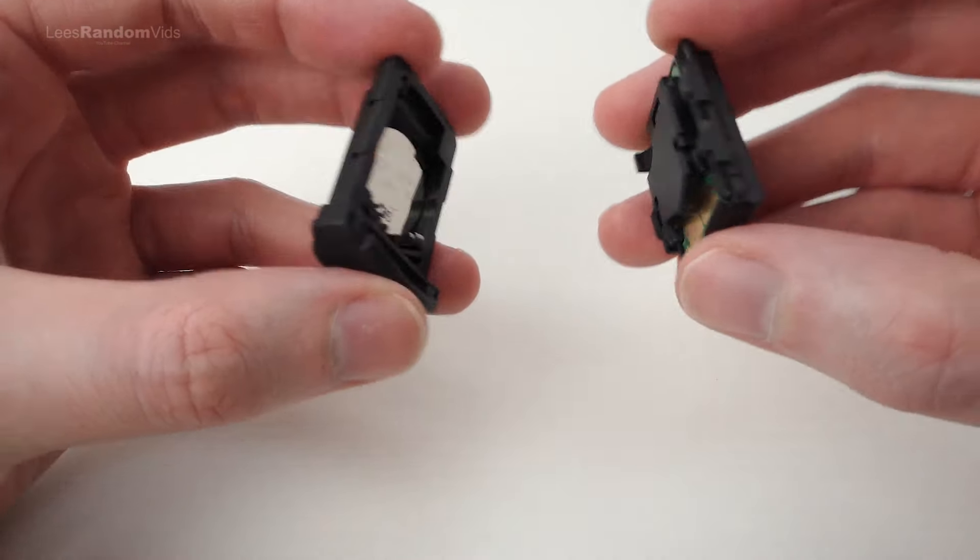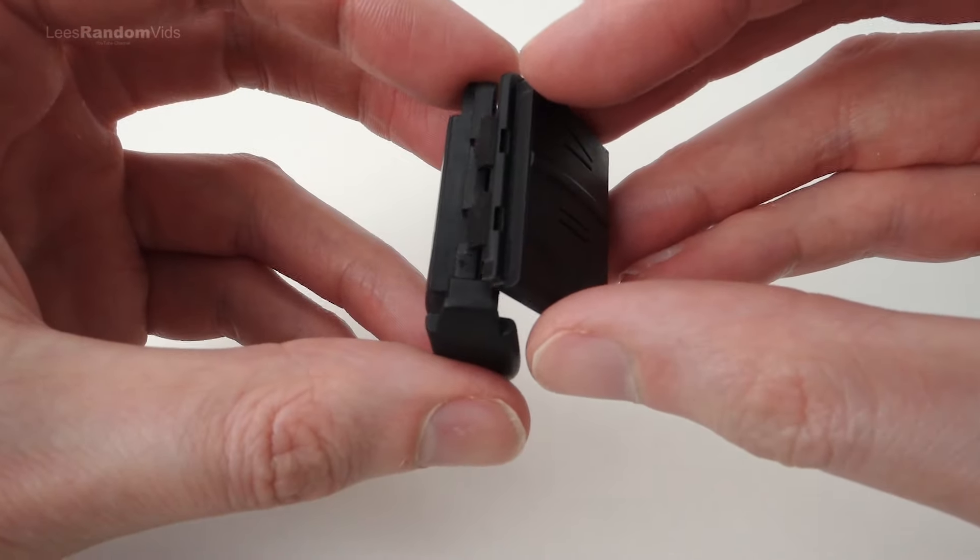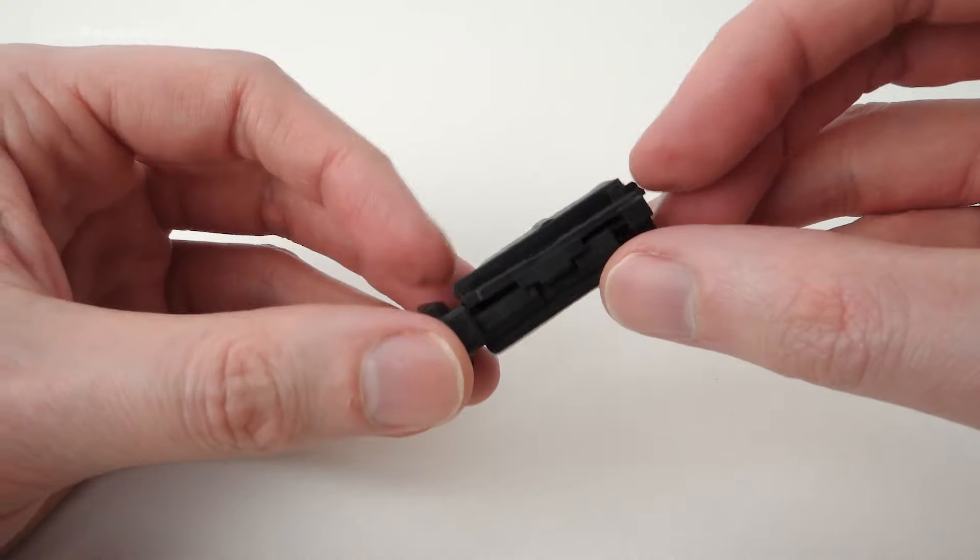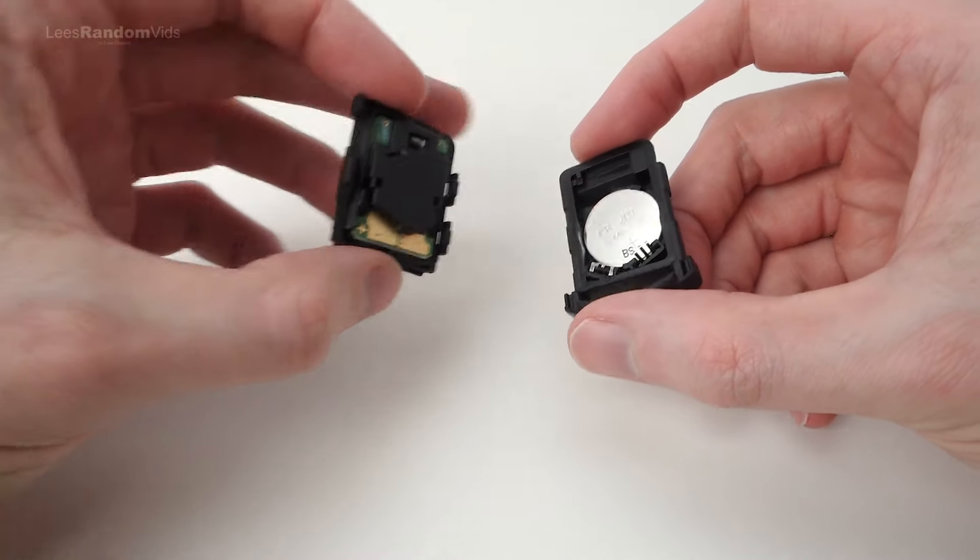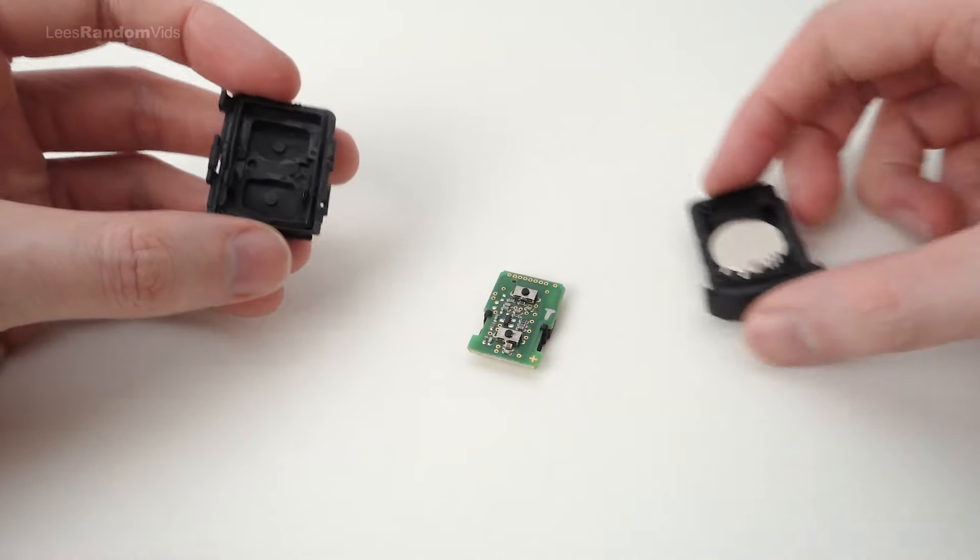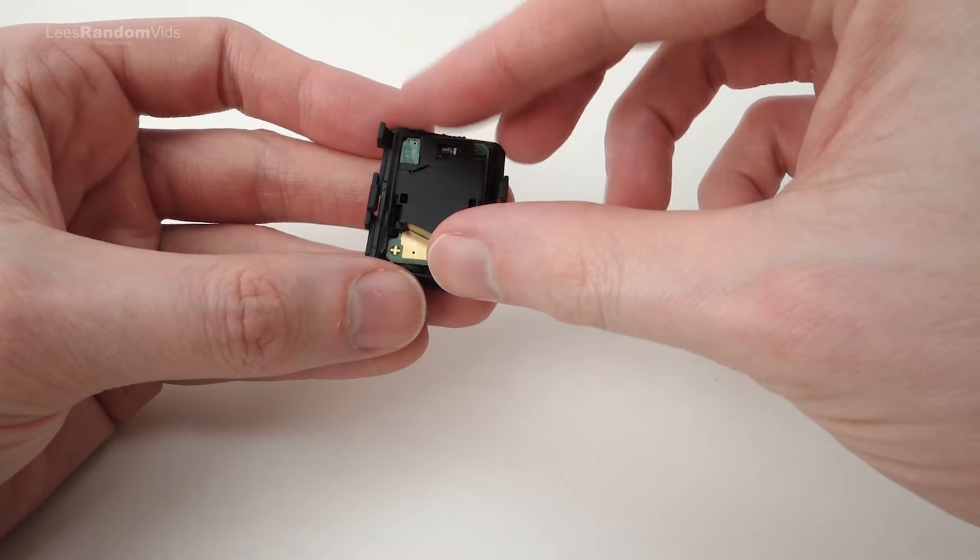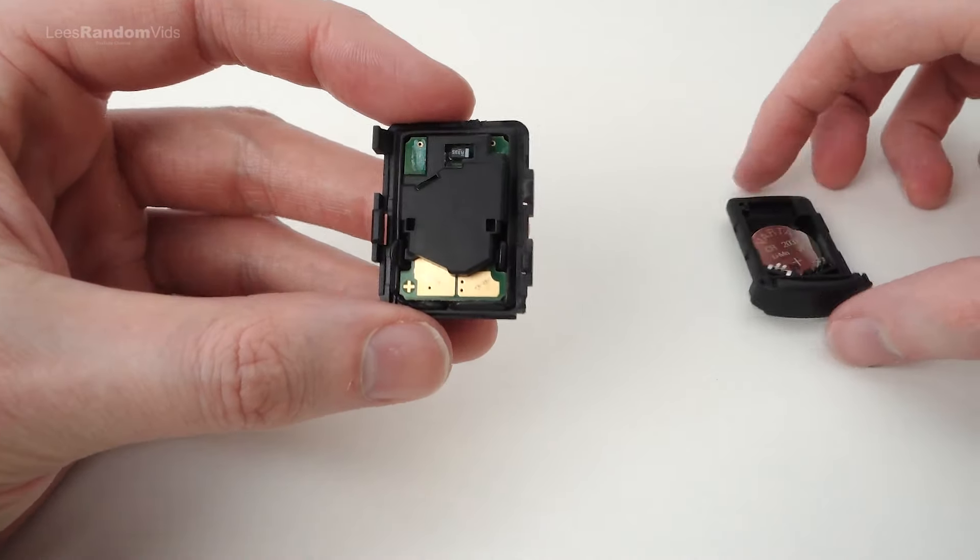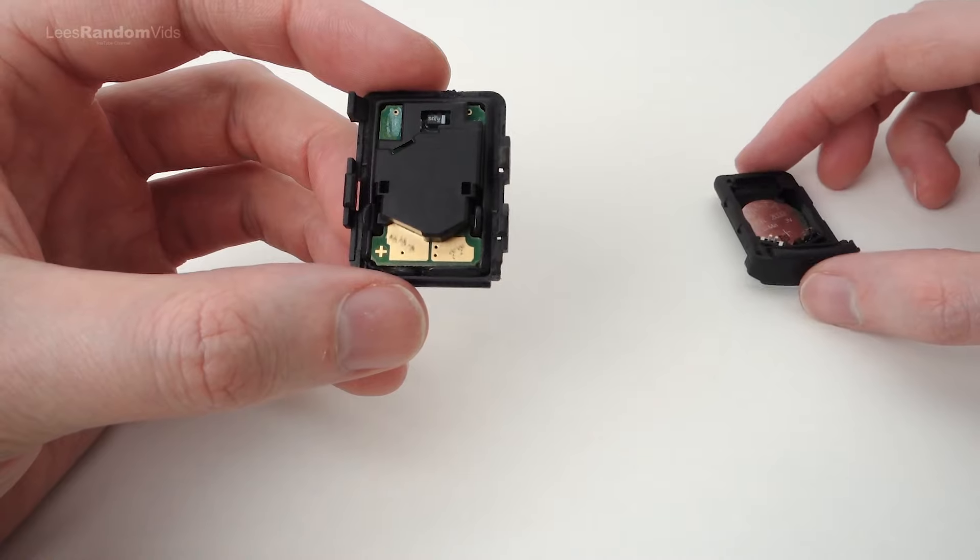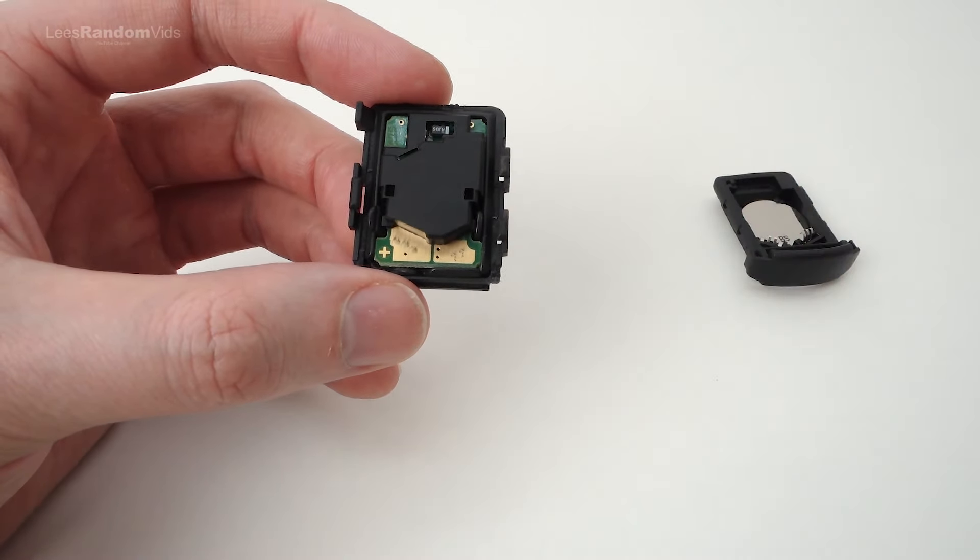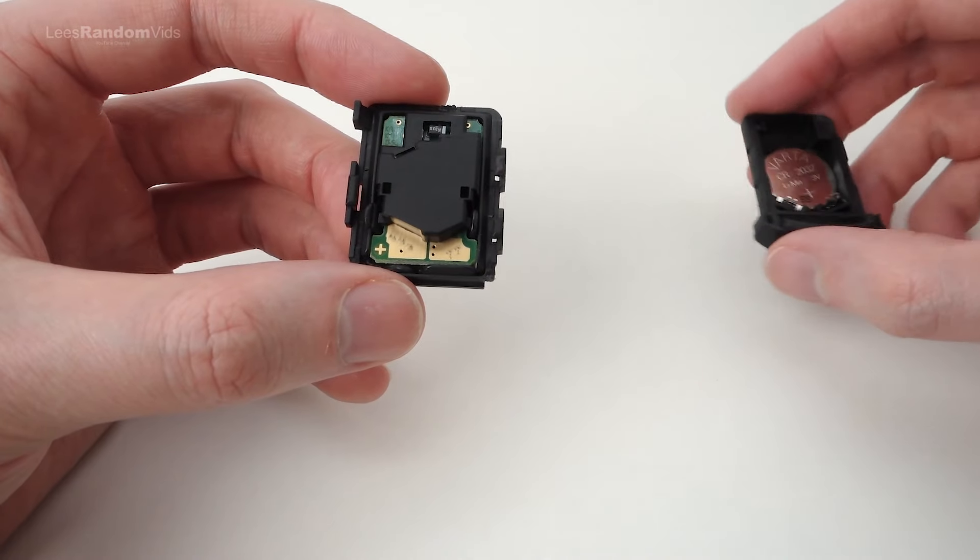Now take the two halves of the key fob and gently clip them back together. Don't worry if the circuit board falls out of the other half. Just gently put it back in place as shown. Lay the circuit board button side down. It can only go in one way around because of these cutouts on the circuit board for these bits of plastic to go through. Then clip the two halves together.